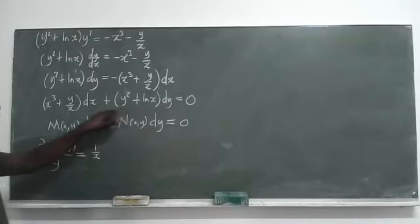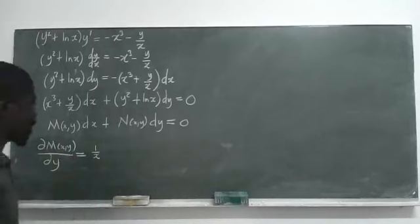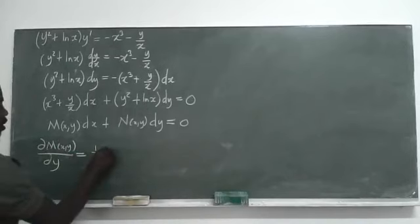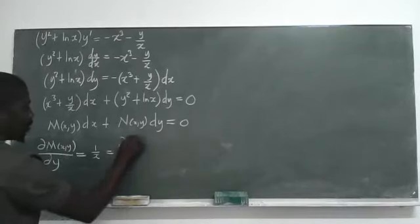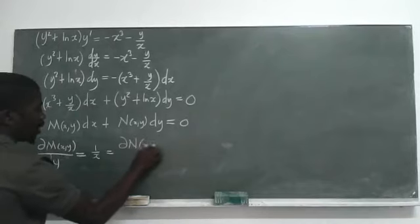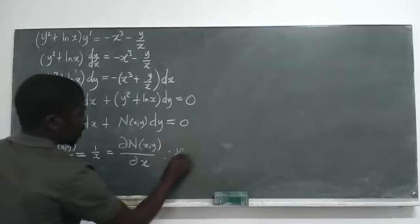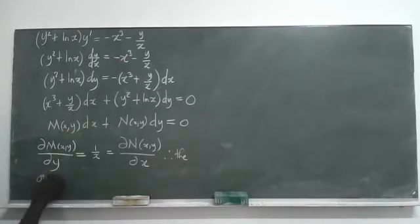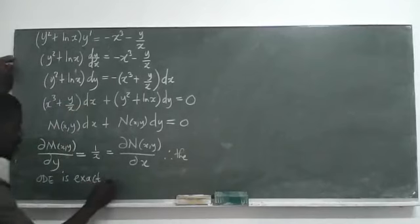Now the partial derivative of N with respect to x: N is y squared plus ln(x). Here y is a constant so it becomes zero, and the derivative of ln(x) with respect to x is 1 over x. As you can see, we get 1 over x for both partial derivatives.